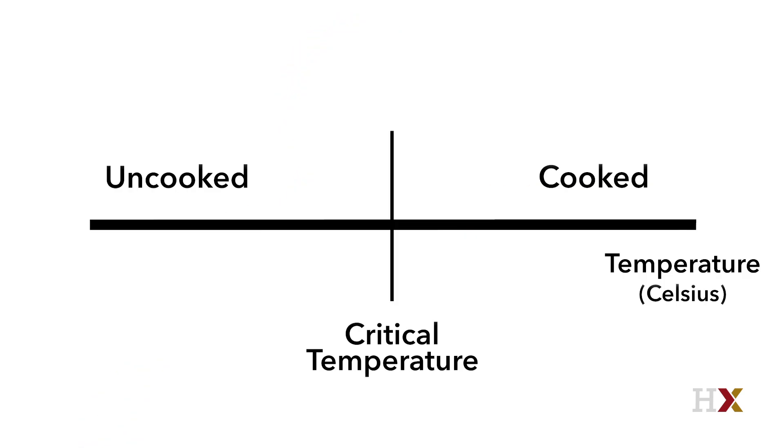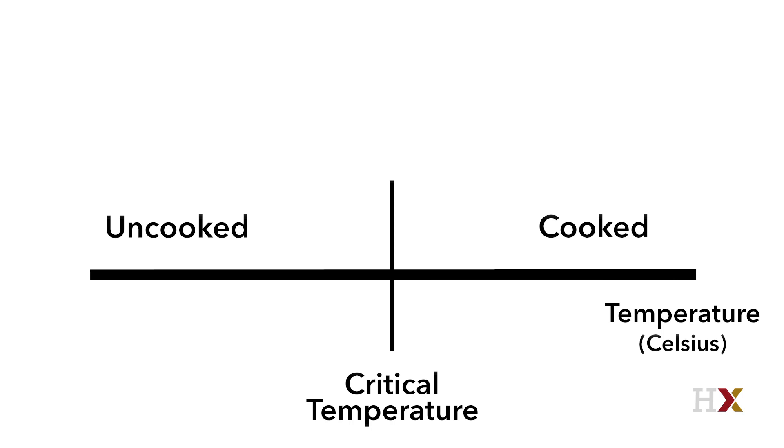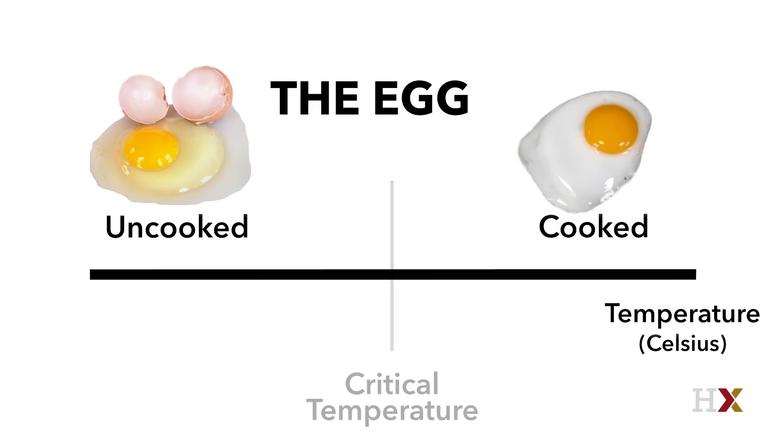For example, here is the phase diagram of an egg. Below some critical temperature an egg is uncooked—an uncooked egg is essentially a liquid, you can shake it up and down and feel that it's liquid inside—whereas a cooked egg, when you cook it above some critical temperature, becomes a solid.